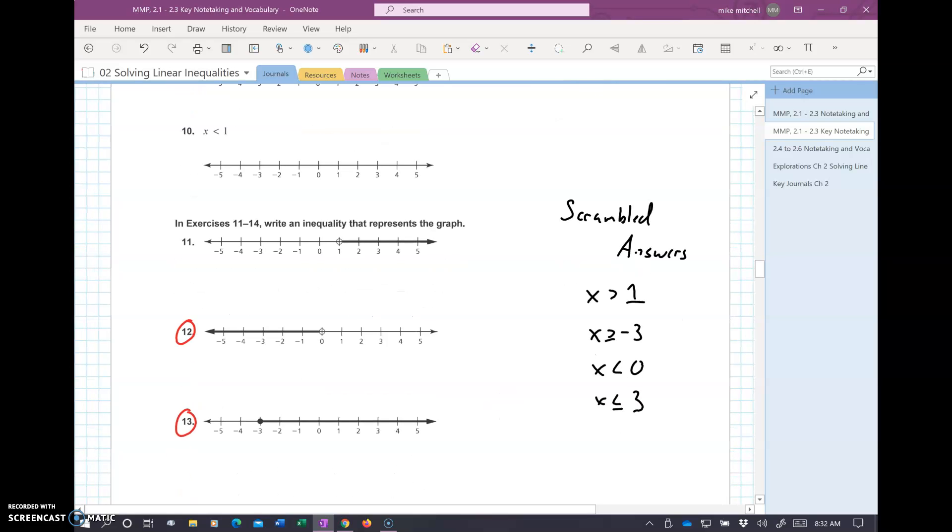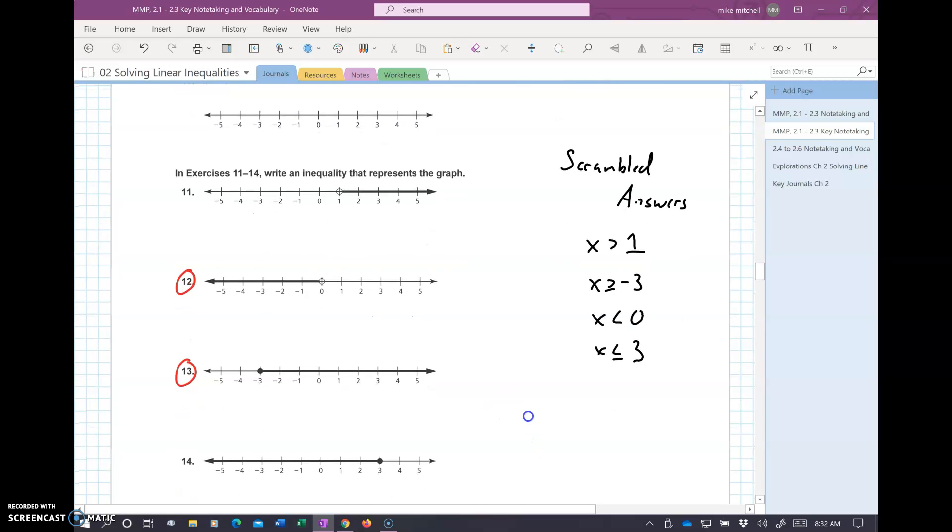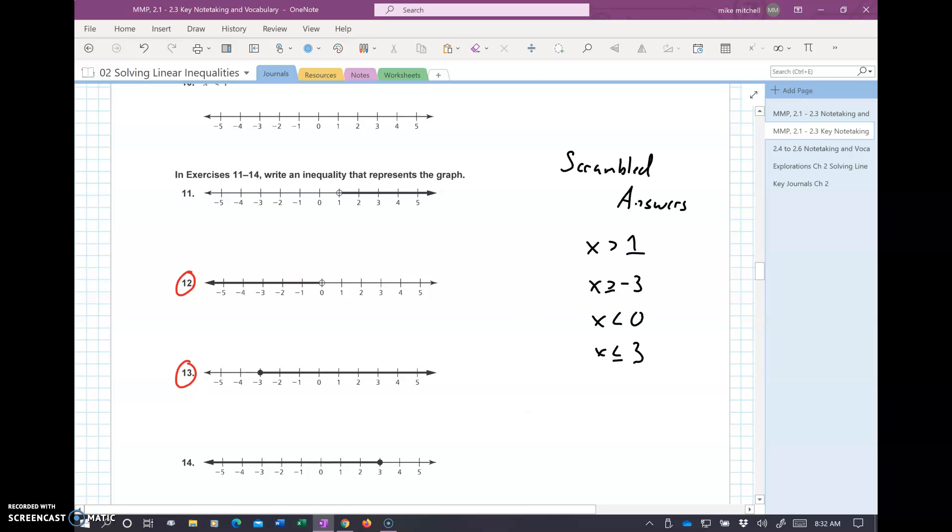I do have some scrambled answers over here. Write the inequalities. So, here I have zero. I'm at zero. It's open. So, that's got to be a less than or greater than. It's going to the left. So, I'm going to make this a less than. Same thing. You can start with the X. Going to the right. So, that's got to be a greater than. It's a solid circle. So, that's greater than or equal. And, then you just put the number in negative three. There's one answer. There's another answer. So, you can see your other two right there.